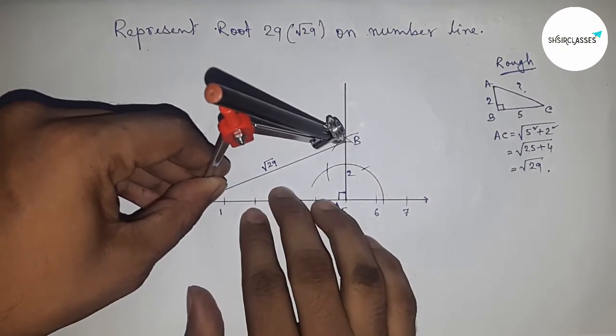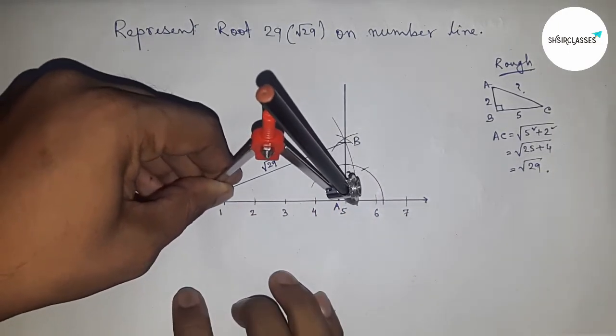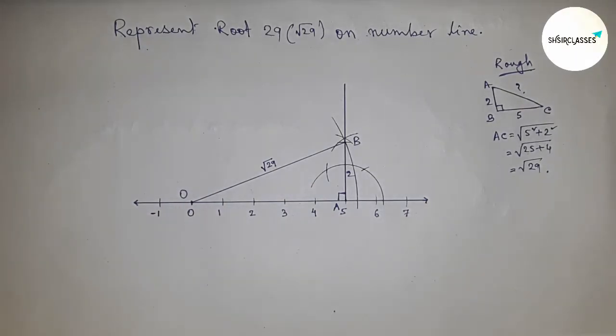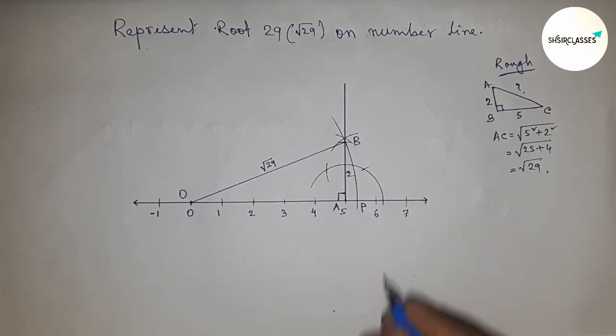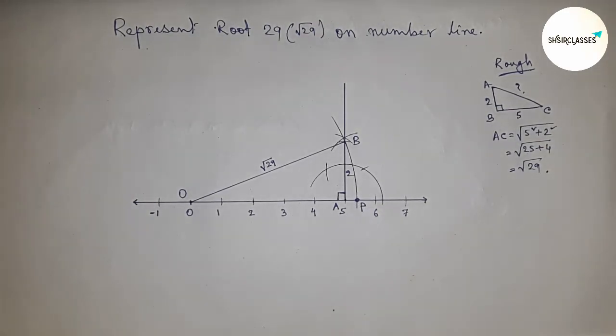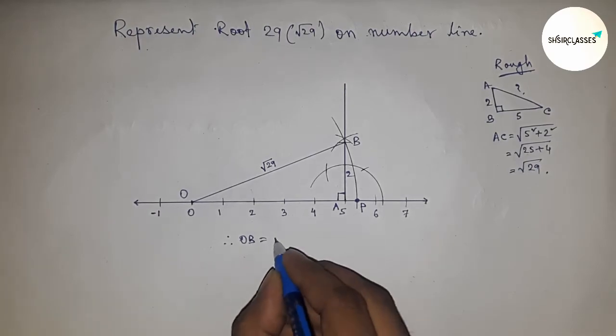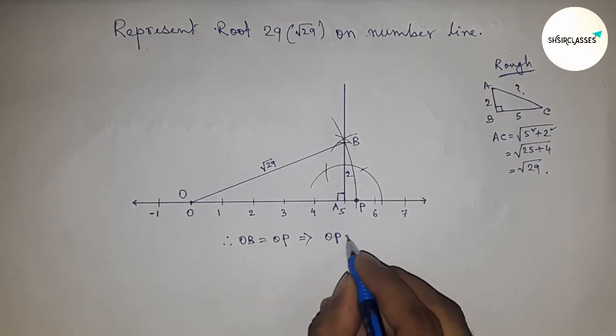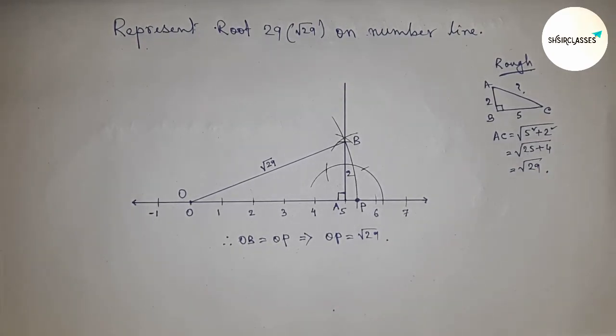Next, taking the length OB by compass and drawing an arc which cuts the number line at point P. This is the representation of root 29 on the number line. Therefore, OB equals OP, and OB equals root 29, so this implies that OP equals root 29. Thanks for watching, please subscribe, like, and comment on my video.